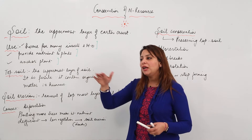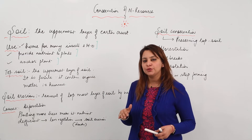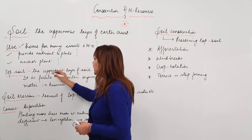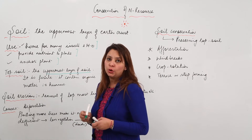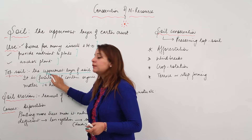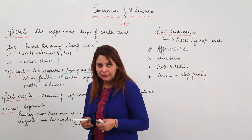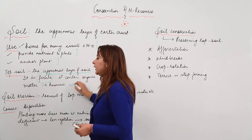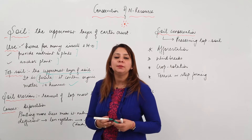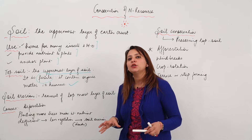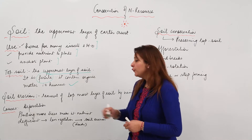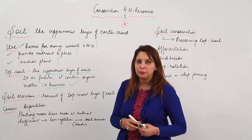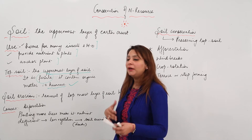Now, what is topsoil? Soil has different layers, and topsoil is the most important one. It is the uppermost layer of the soil and is called the fertile layer because it contains organic matter and is rich in nutrients. It contains humus, which makes the soil efficient for the growth of plants.